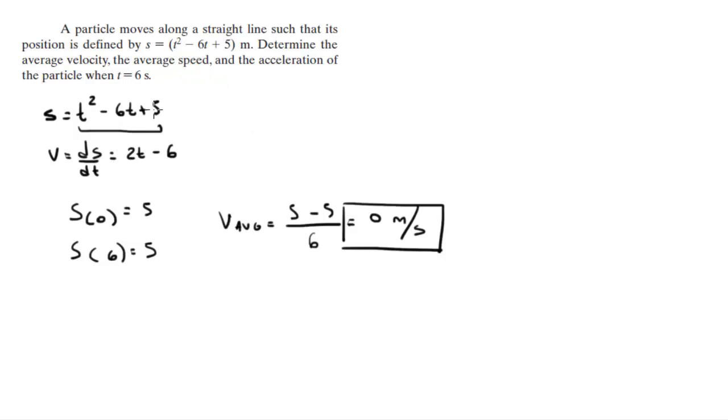Now, to be able to find the average speed, you need to find how much it really displaced. That's why we found the equation for the velocity. So when does this equal 0? This equals 0 when t equals 3, which means that from 0 it turned at 3 and then it finished at 6.